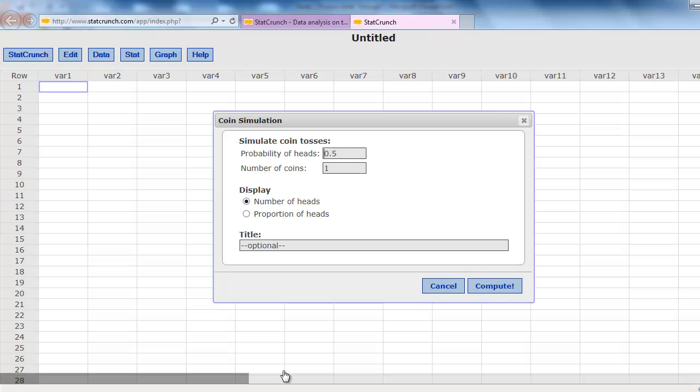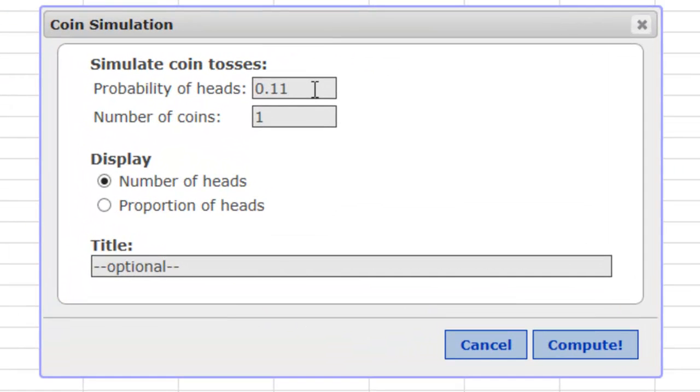Okay, now we're going to set up the applet. I want you to change probability of heads to be 0.11 because 11% of the people are left-handed, or so we're told. The number of coins is going to be 250 because our sample size was 250, and click on Compute to start the applet.